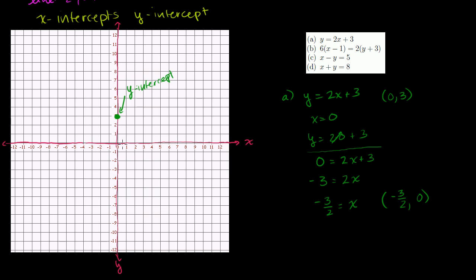So negative 3/2 — that's negative 1 and a half — with y = 0, is our x-intercept. That's where the line intercepts the x-axis. Now I'll connect those two points and keep going in both directions forever, and that is the line for Part A.